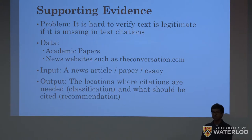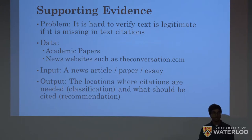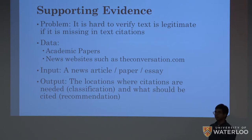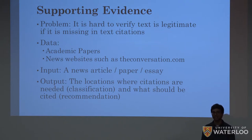It turns out there are some really good data sources to help train models to do this. If you look at academic papers, they all have really good in-text citations already, which you can use as ground truth. Or there are some news websites — theconversation.com is one we identified — which has academic-quality citations but for news articles. So concretely, you would download a large corpus of maybe a million academic papers, or whatever your computer can handle.